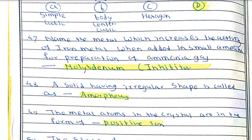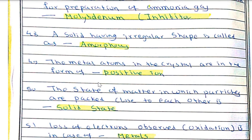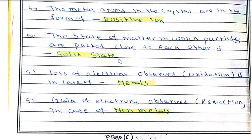The metal which increases the activity of iron when added in small amounts for preparation of ammonia gas is molybdenum, which is known as a promoter. A solid having an irregular shape is called amorphous. The metal atoms in the crystal are in the form of positive ions because of loss of electrons.